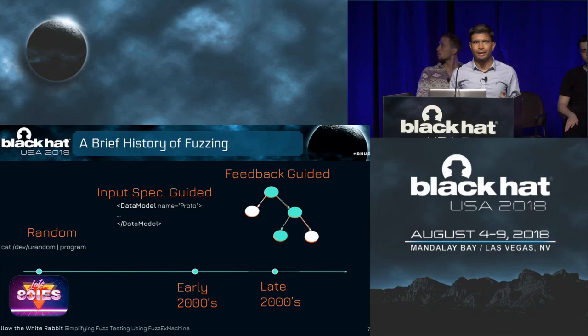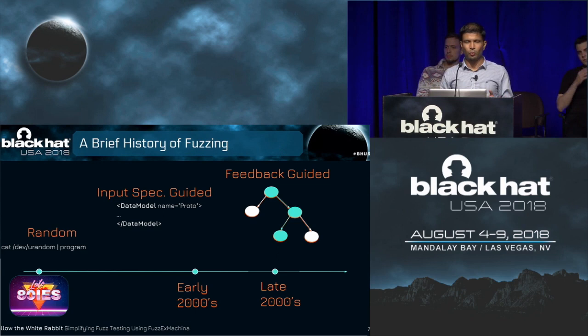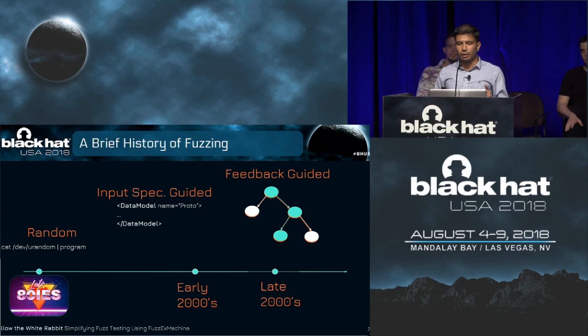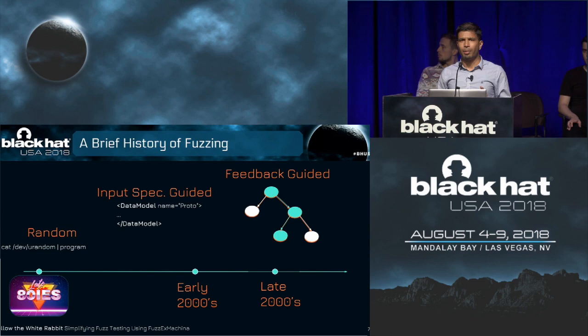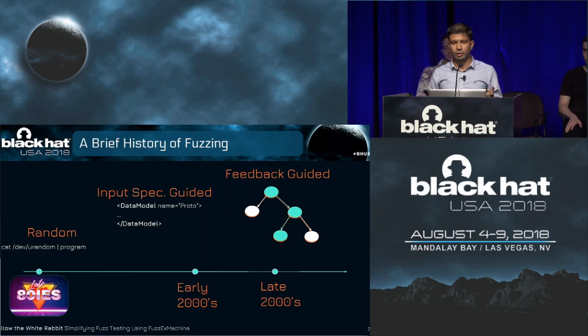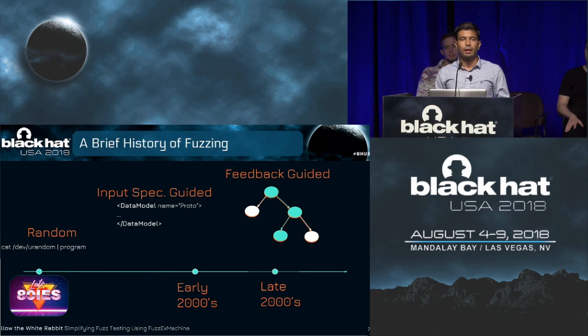Ever since then, we've come a long way in making fuzz testing more effective. Security researchers quickly figured that simply random testing is not very effective because while it can quickly find shallow bugs, it cannot test deep portions of the program. So in the early noughties, some researchers proposed so-called input specification guided fuzz testing. The main idea was to tell the fuzzer what the program does by feeding it a specification. One way to provide such a specification is to tell the fuzzer what inputs to the program under test look like — for example, if you're fuzzing a TCP protocol parser, you define the TCP data format so that the fuzzer can meaningfully fuzz test your program.